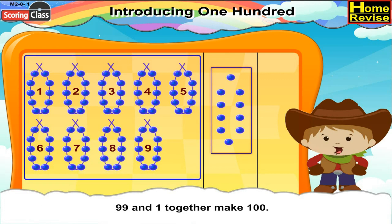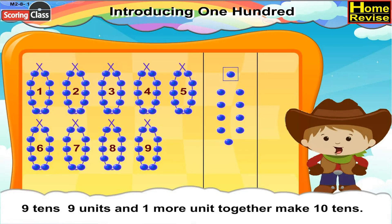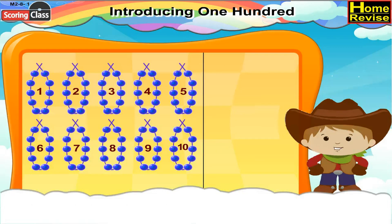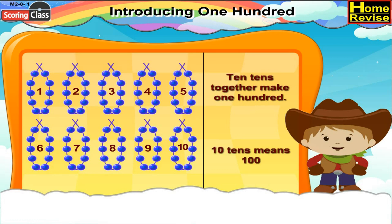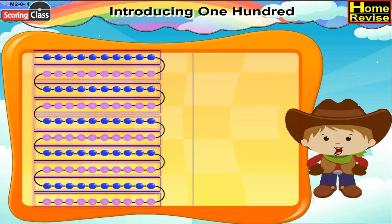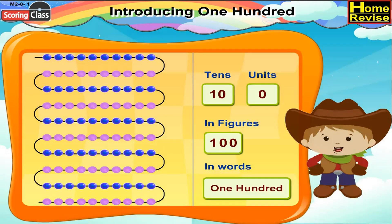If we add one more bead to it, it will be 100. So, 99 and 1 together make 100. Which means 9 tens, 9 units and one more unit together make 10 tens. 10 tens together make 100. That is why in the picture you can see 10 strings of 10 beads each. 100 means 10 tens and 0 units. So, in figures it is 1, 0, 0 and in words it is one hundred.